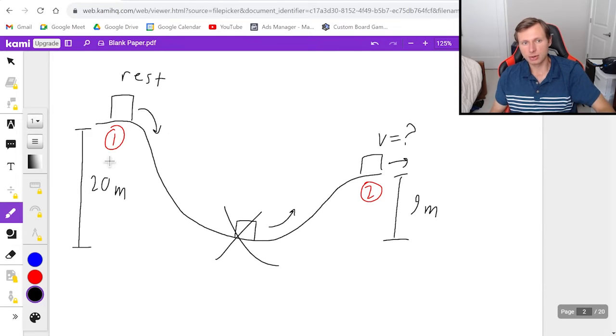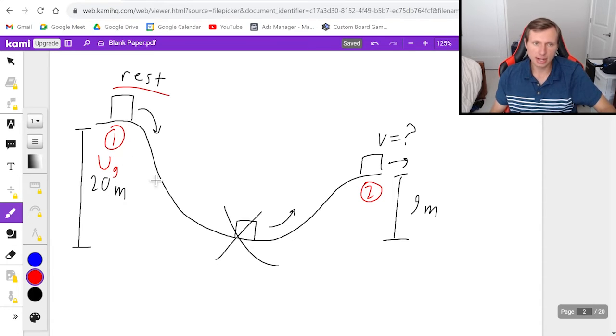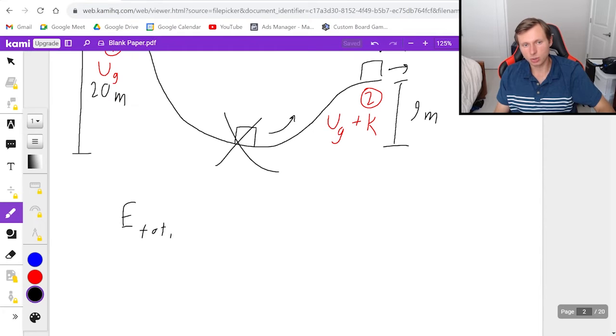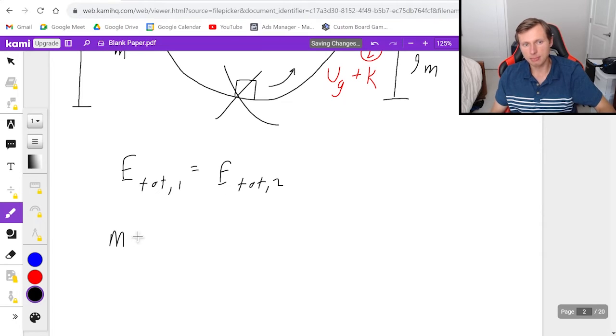The only point I care about is the final and the initial and I don't care about anything else. At the initial position there is definitely gravitational potential energy, UG. That's because we have a height above the ground. And since we're at rest, there is no kinetic energy. So that's it for point 1. At point 2, I would say that we have gravitational potential energy again because we have 9 meters above the ground. But we're also going to have some kinetic energy and that's because we definitely have some velocity here.